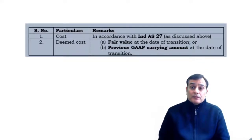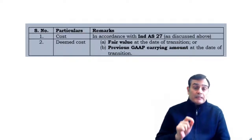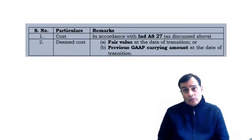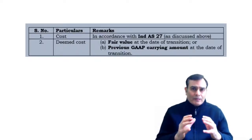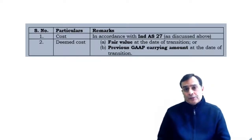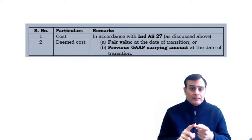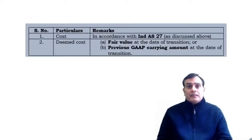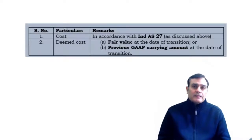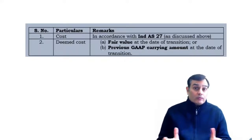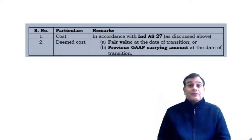Under deemed cost, the company has one of two options: either they consider the investment at fair value on the date of transition, or they could take the previous GAAP carrying amount on the date of transition. So effectively the company has three choices when making the opening Ind AS balance sheet: it can be taken at cost as per Ind AS 27, or at fair value on the date of transition, or at the same carrying amount as under the previous GAAP. When it uses the previous GAAP carrying amount, that is called a deemed cost — and even when fair value is used, it is also considered a deemed cost. Or the company goes for a cost measurement. So that is quite simple and straightforward.